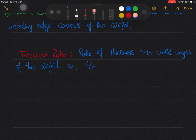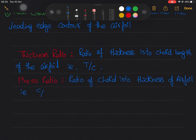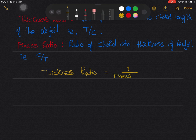First comes thickness ratio. It is the ratio of thickness of airfoil to the chord of airfoil, that is T by C. I repeat, it is the ratio of thickness to chord of airfoil. Next comes fineness ratio, which is the inverse of thickness ratio. That is it is ratio of chord to thickness of airfoil.